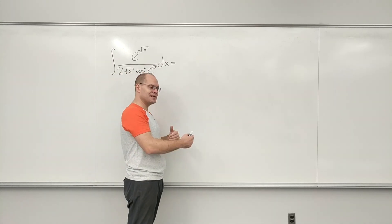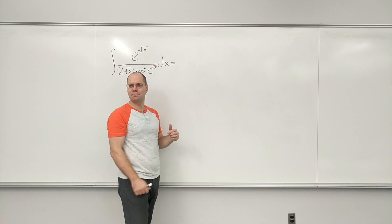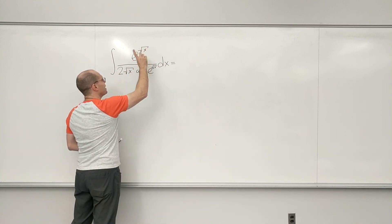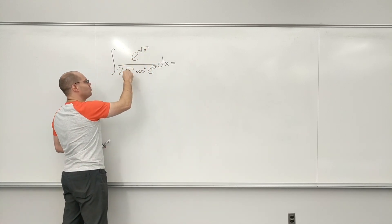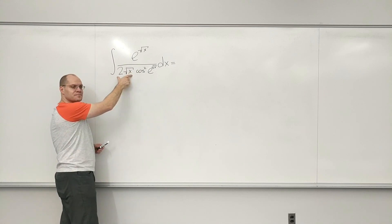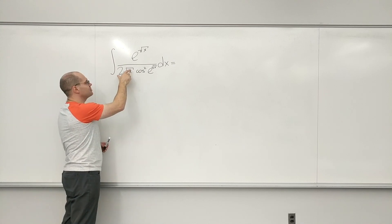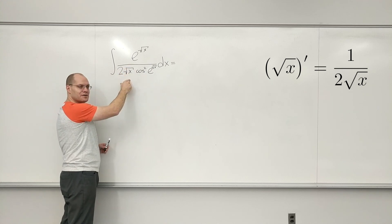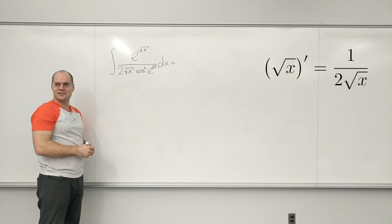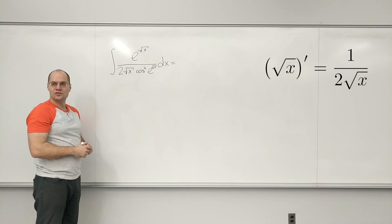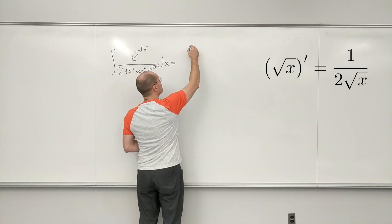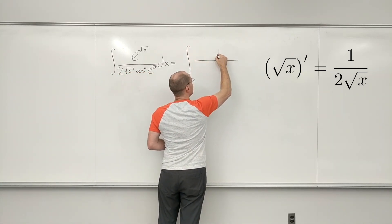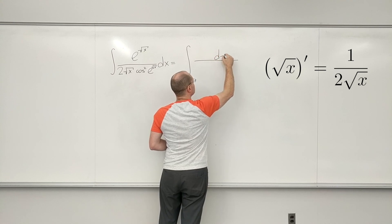When you do repeated integration by substitution, instead of going from complicated to simple, you go backwards — from simple to complicated. I want to have square root of X, and I have 1 over 2 square root of X. That's actually good, because that is the derivative of square root of X. So let me recognize that by writing d of square root of X.